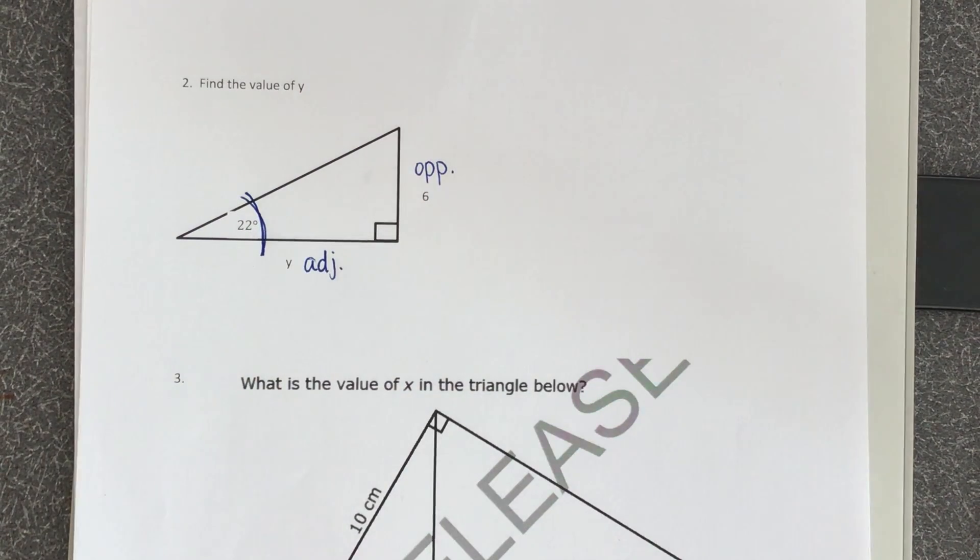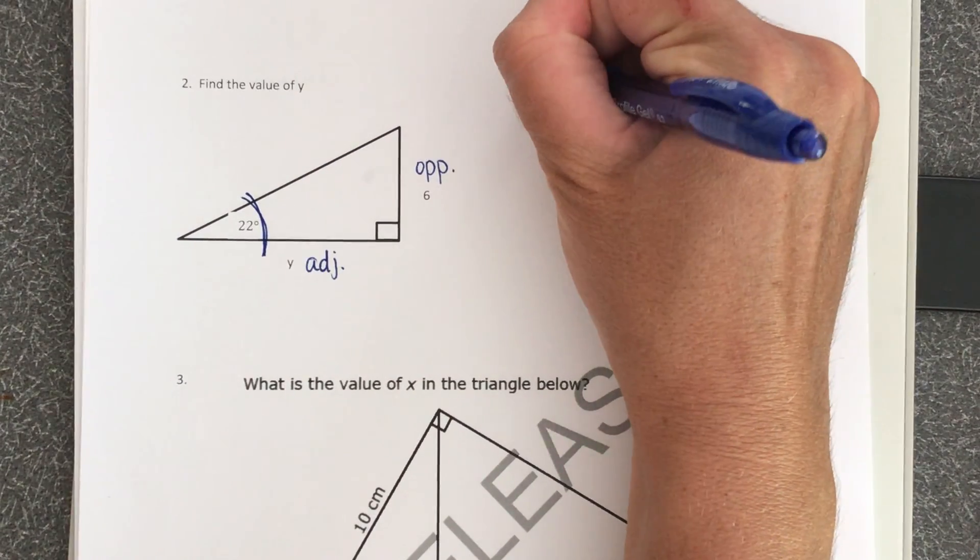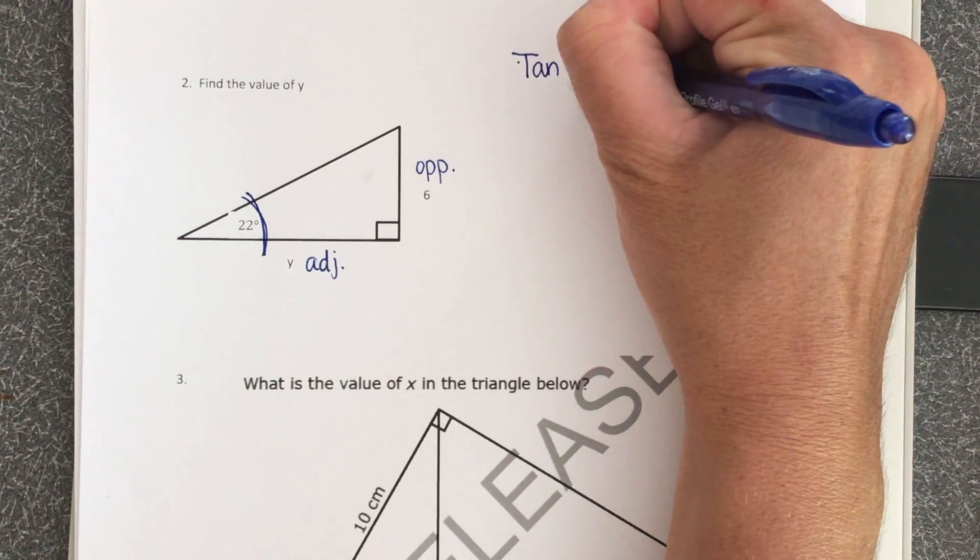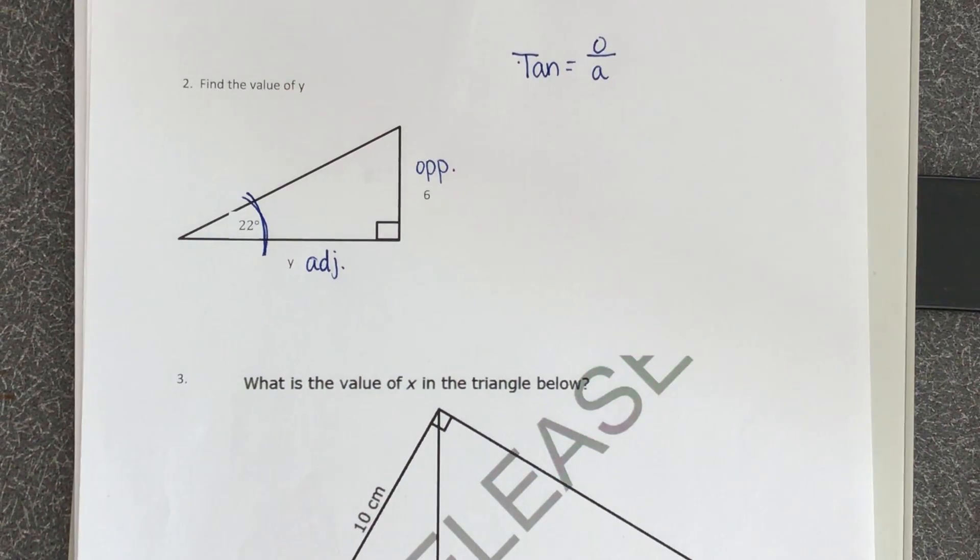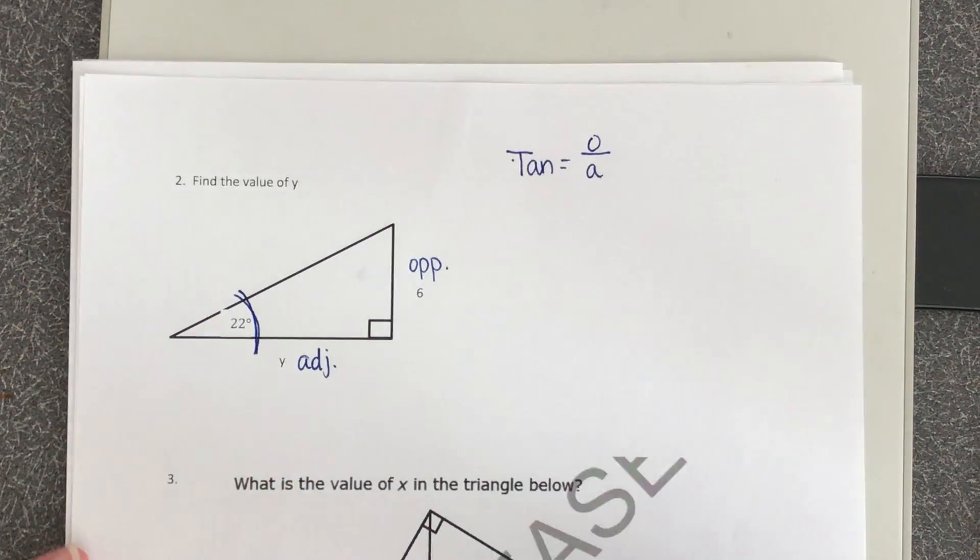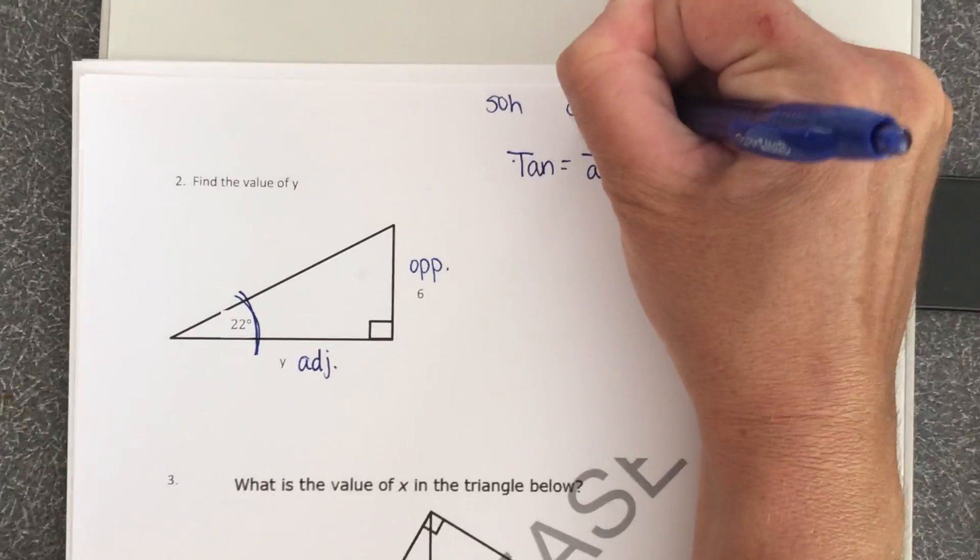So which ratio uses adjacent and opposite? That's tangent. Tangent is equal to opposite over adjacent. If you're still struggling with your ratios, write them up at the top every time. Soh-cah-toa.